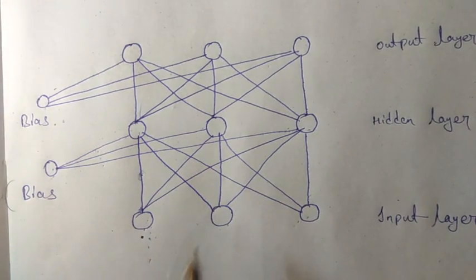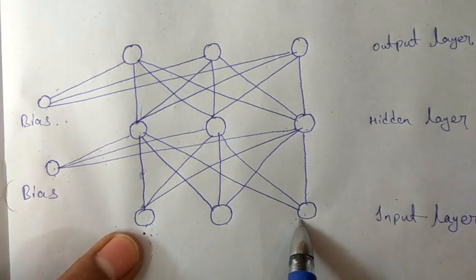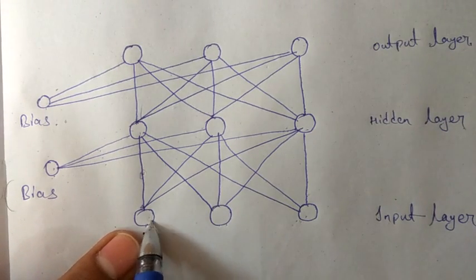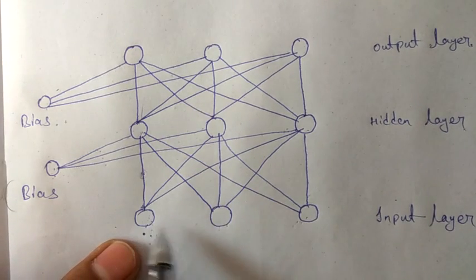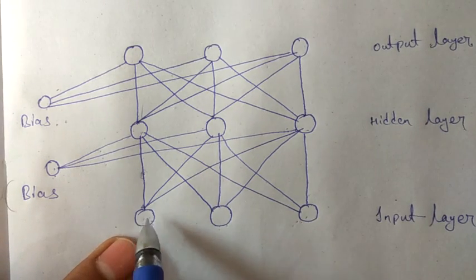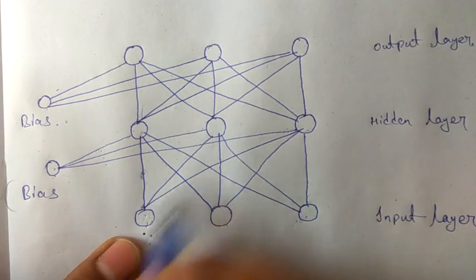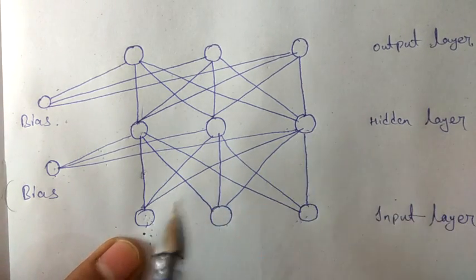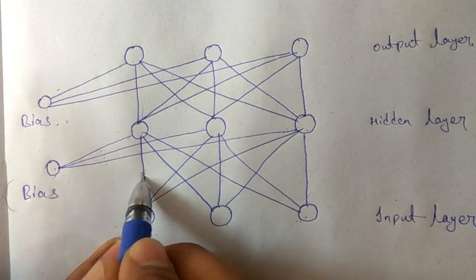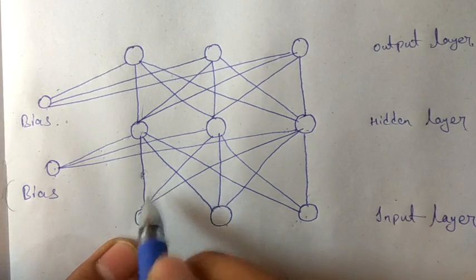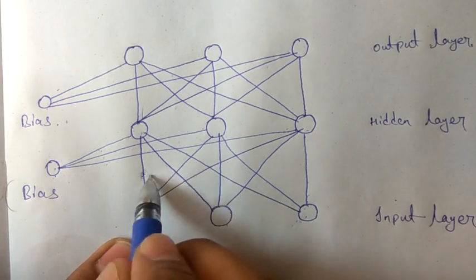How back propagation works: when we give input to the neurons, the input travels to the hidden layer. As it travels, the input is multiplied with the weights. These are the weights on the links traveling to this hidden layer, so these weights are multiplied with the inputs from the three neurons.